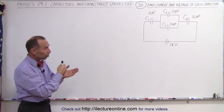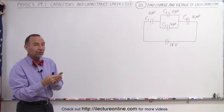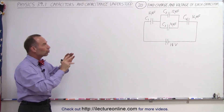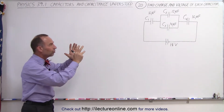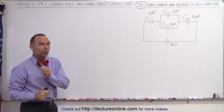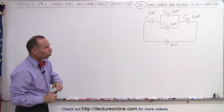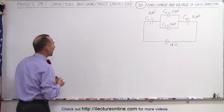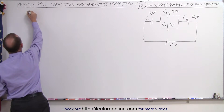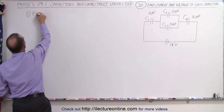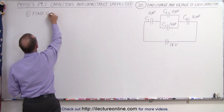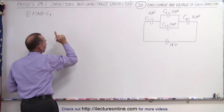To find the charge in each capacitor, we first must find the total charge on the whole system — on the whole circuit — which means we need to find the equivalent or total capacitance. So step one: find C total first.